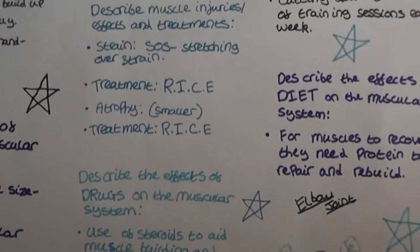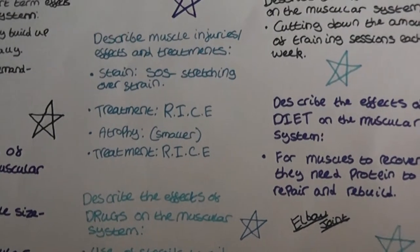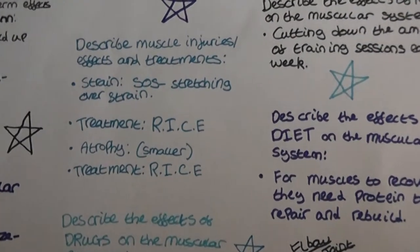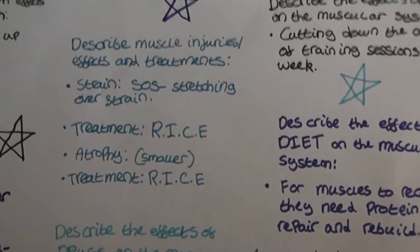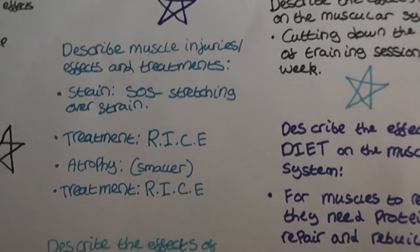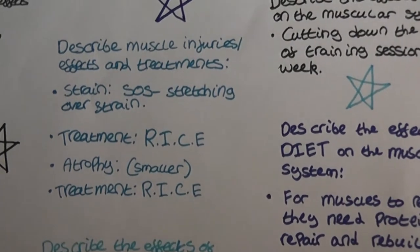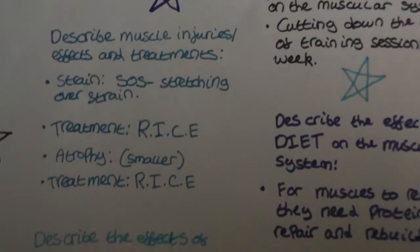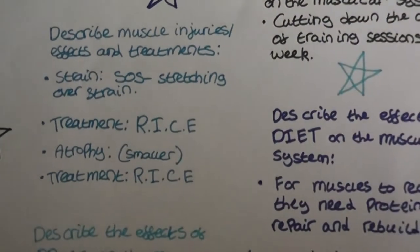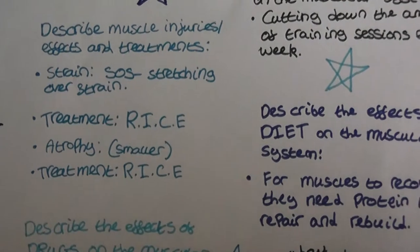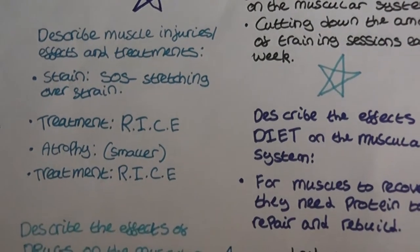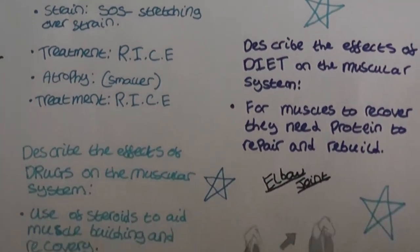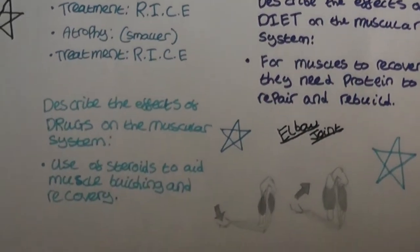Muscle injuries, effects and treatments. For a strain: stretching or overstrain, also known as SOS, the treatment is RICE. For atrophy: the muscle becomes smaller, and the treatment is also RICE.